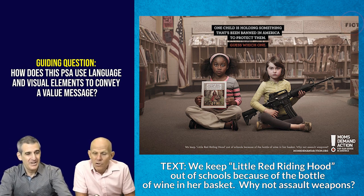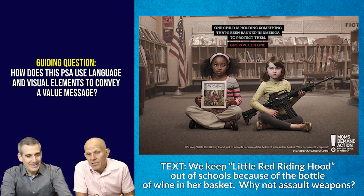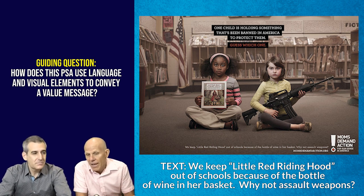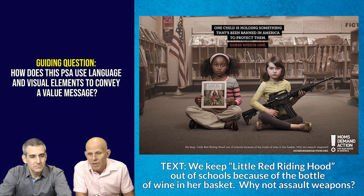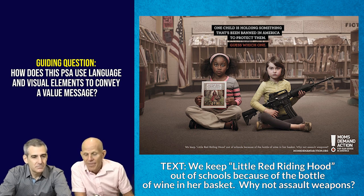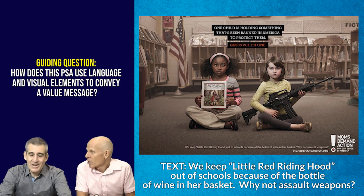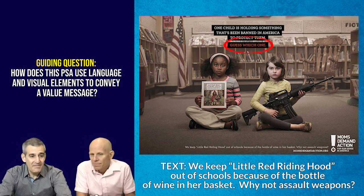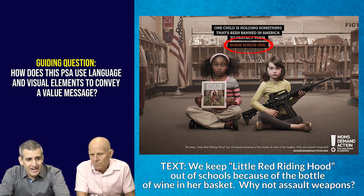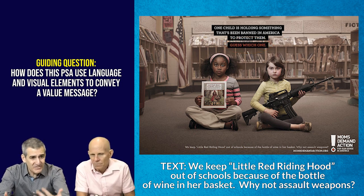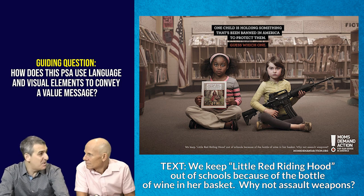Now let's talk about the text, because the text is very important. The headline reads: 'One child is holding something that's banned in America to protect them.' And then in red it says, 'Guess which one.' That's an alarming color - they're demanding us, interacting with us, and we have to interact with them.